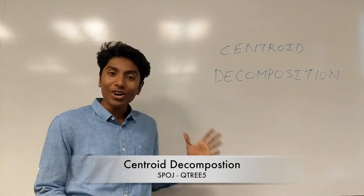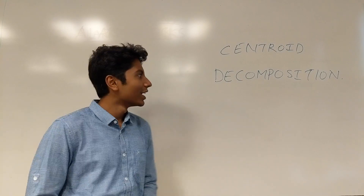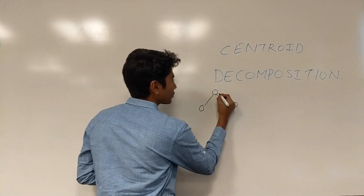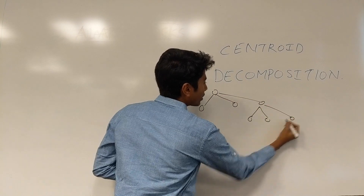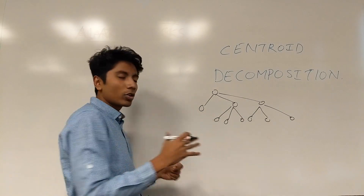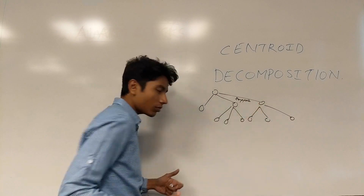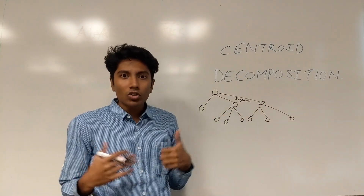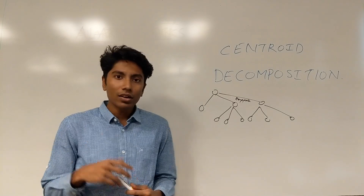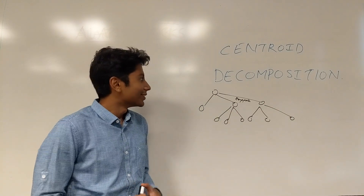Hey guys, this is GKCS. We are talking about Centroid Decomposition, which is actually a long-awaited topic and far more interesting than I thought it would be. Centroid Decomposition is taking a tree — a graph which doesn't have any cycles — and breaking it into parts, just like in a segment tree, such that each parent contains some aggregate information. You can solve queries and handle updates. We'll be running through two problems today which use Centroid Decomposition.